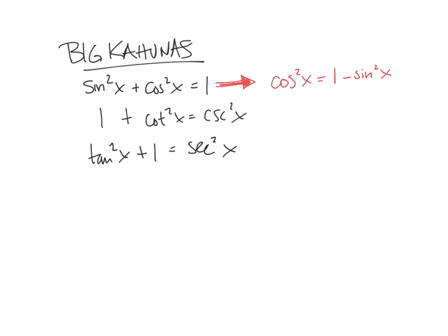Likewise on this one—and there are other options, I'm just giving you a demonstration here—let's say I moved cot²x to the other side. That means that 1 equals csc²x minus cot²x. Or I could subtract 1 from both sides. You can manipulate these, so just keep that in mind. That's my number one hint.